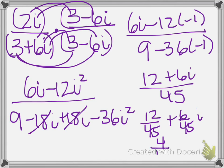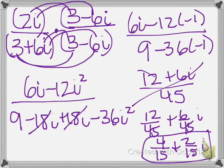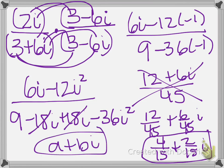And now I reduce my fractions or simplify them. So it's 4 15ths plus 2 15ths i. And this keeps it in the a plus bi form. You don't want to write it with the 12 plus 6i divided by 45. You always separate them so that you have the a plus bi format. And so that would be my final answer, 4 15ths plus 2 15ths i. And we'll go over more of this in class. Thanks.